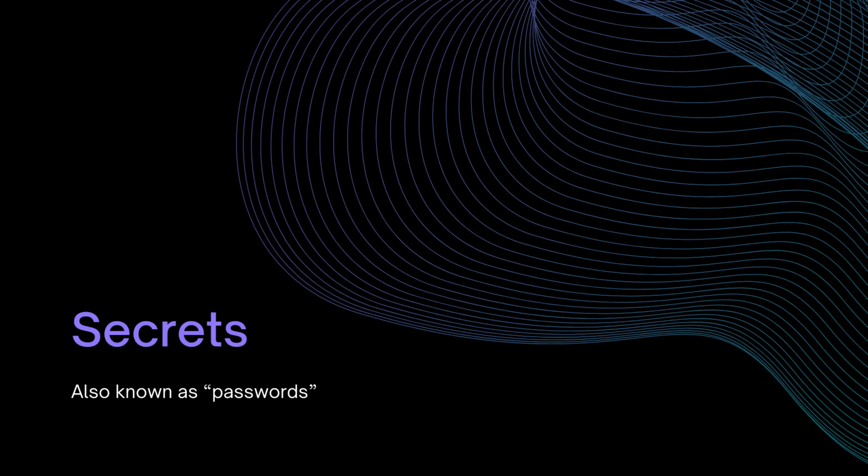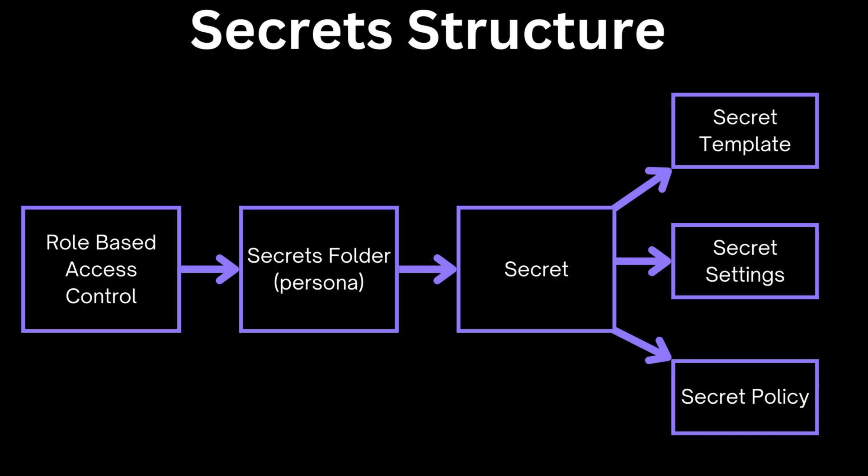Let's talk about secrets. Secrets are really easy to understand - it's just another word for passwords. Each secret can have a secret template, secret settings, and secret policies. These three things play a role in understanding how a secret works in an organization and allow us to do things like password rotation or using a passwordless system. Each secret will also belong to a folder, and that folder can have role-based access control, as well as the secret itself having role-based access control done through the secret settings.